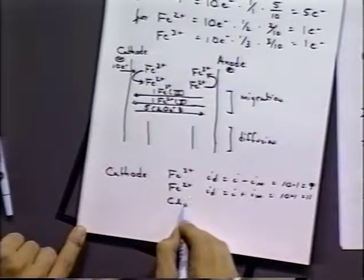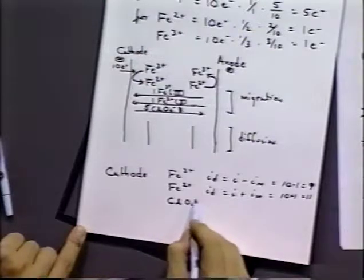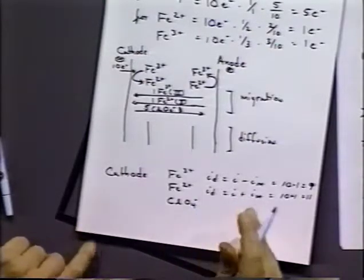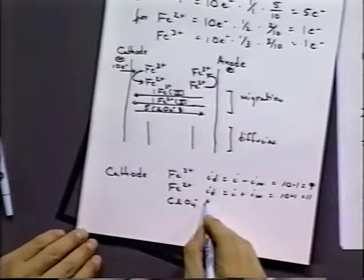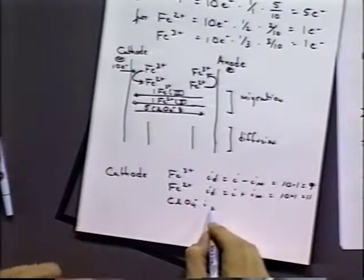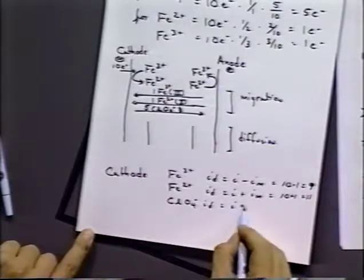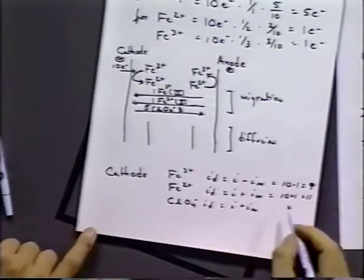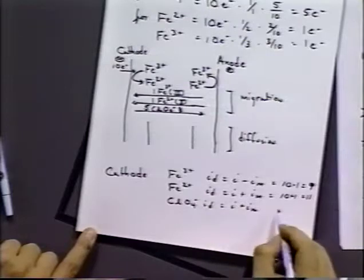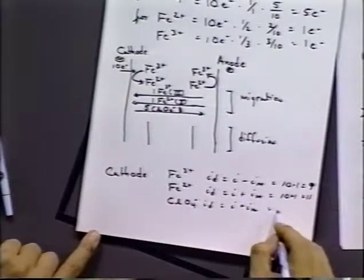At the same time, we still have perchlorate ions at the interface that are not diffusing, but they're migrating. So ID is equal to I plus IM, where ID is zero, so we're having a value of five minus five in that case.